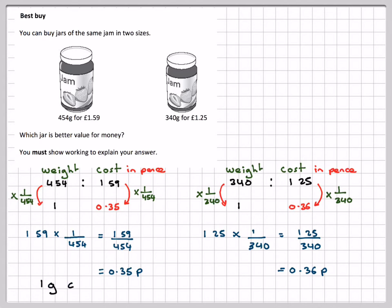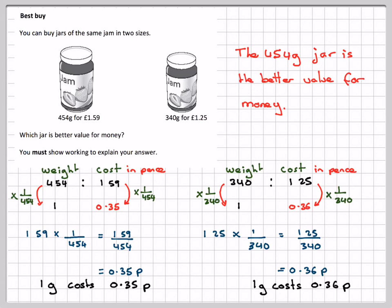We're left with the conclusion that 1 gram here costs 0.35 pence, and here 1 gram costs 0.36 pence. So therefore, this one is the better value. Therefore, the 454 gram jar is the better value, which I think was A for the one that you had to choose.